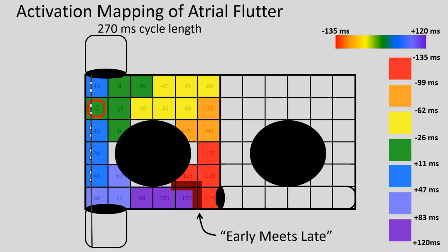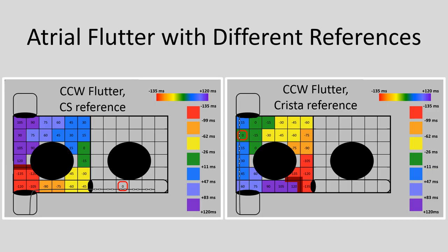Don't be fooled into thinking you must ablate along the border between early and late in macro reentry — that's almost never the case, unless you happen to have that early meets late location at the anatomically correct spot for ablation of atrial flutter, which is on the cavo-tricuspid isthmus — the floor that joins the tricuspid valve and the inferior vena cava, which is the shortest and most efficient distance to ablate. Here, side by side, is the same atrial flutter circuit showing how the color map changes when you change your reference point: the coronary sinus reference on the left versus the crista terminalis reference on the right.